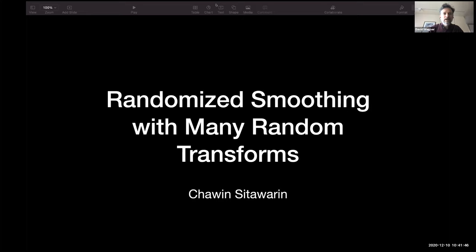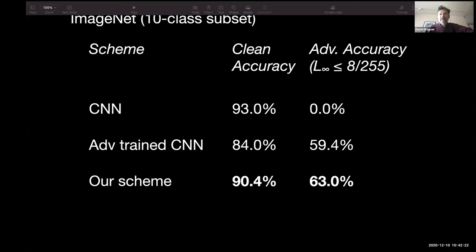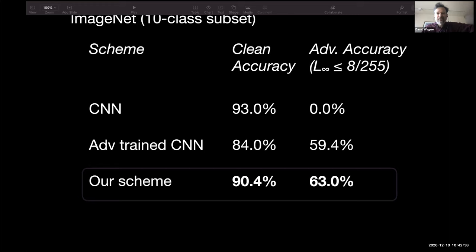We're also looking at improving randomized smoothing. Randomized smoothing typically adds Gaussian noise to an image and then classifies it — it's been found that this helps a lot against stopping these attacks because the attacker won't know what kind of noise is going to be added. We're looking at adding not just Gaussian noise but other kinds of modifications: we blur the image randomly, we may jitter the images a little bit, take a random crop, and make all sorts of random small changes that are not predictable to an attacker before we classify. What we found is that this significantly improves on the basic idea — on a 10-class object recognition dataset we're doing better than adversarial training and better than basic randomized smoothing.